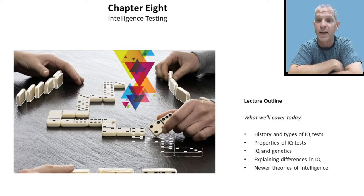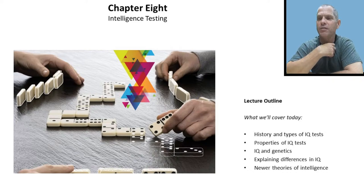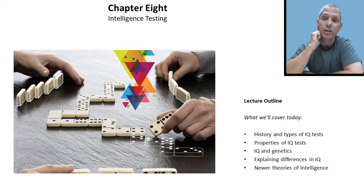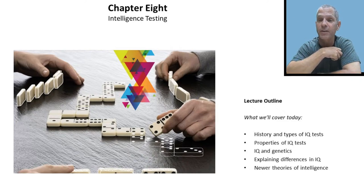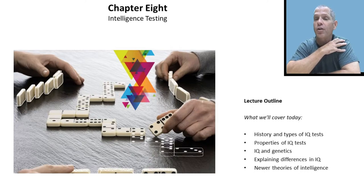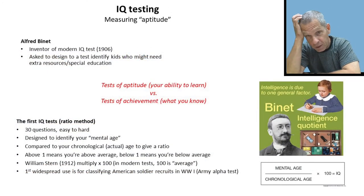We talked about the eugenics movement this past week — selective sterilization, the idea that we could selectively breed certain qualities out of the human race. The particular quality that struck everybody's interest, because it was a newly developed test that seemed really scientific and showed a genetic quality, was the IQ test. Today I'd like to talk about the history and nature of IQ testing, as well as its limitations — history, properties, IQ and genetics, observed differences in scores, and newer theories of intelligence.